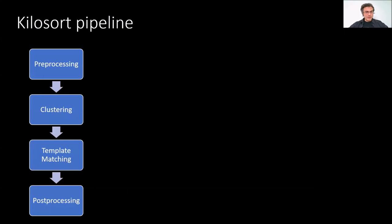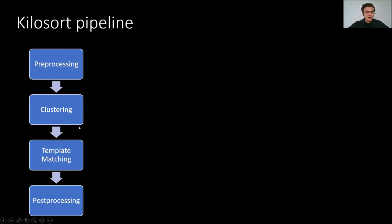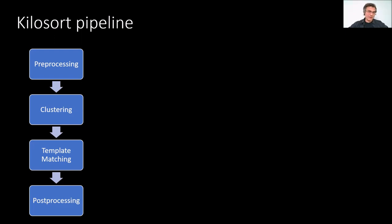Here's the pipeline. There are essentially four steps: preprocessing, postprocessing, and the core of the algorithm, which includes a clustering step and a template matching step. In Kilosort, these two have always been combined into a single unified framework that does clustering and spike extraction at the same time as template matching — it's all one cost function, one optimization. For the purposes of this presentation, I'll treat them separately because they each have their own caveats.